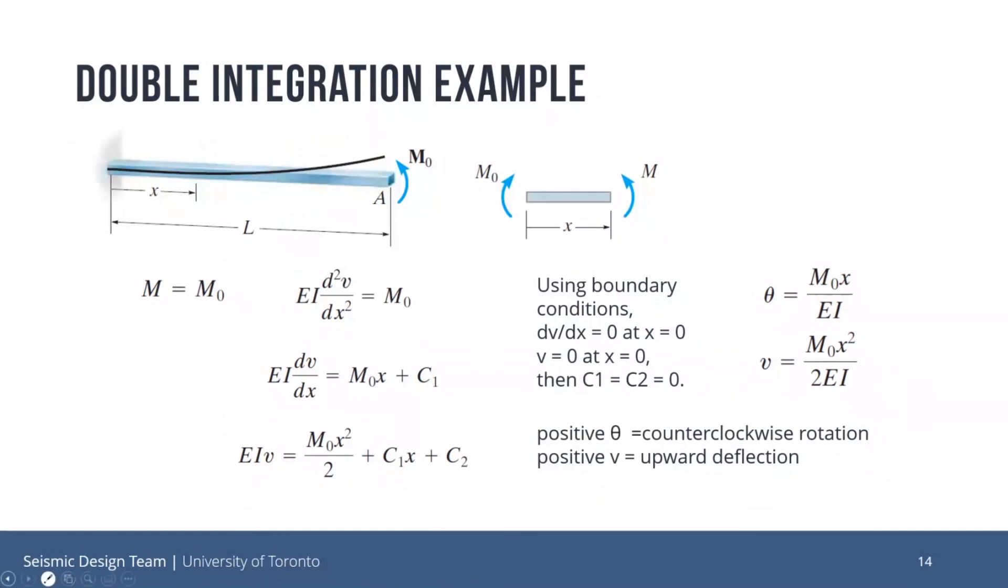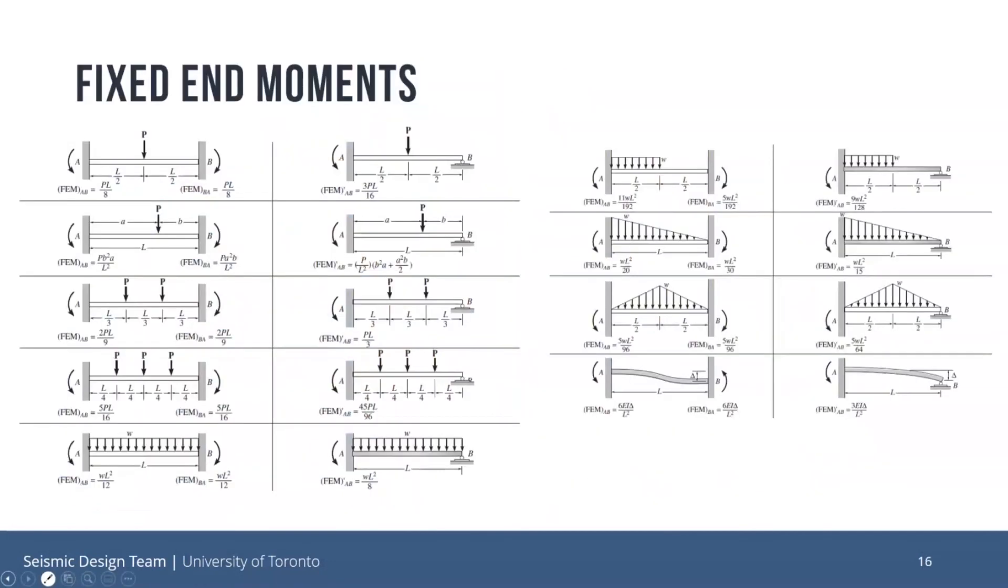And I also mentioned that we have a fixed moments chart. So this isn't directly related to deflections, but it's a pretty handy chart to have. So say if you want to find the fixed moments for a particular beam, you can just refer to this chart. And there are certain loading conditions that are pretty common you see. So if you can find the loading condition that you're looking for, you can easily substitute in the parameters or the variables and then find the fixed moments that you're looking for.